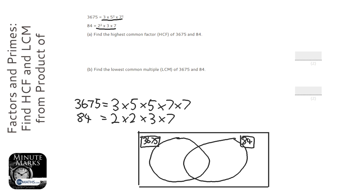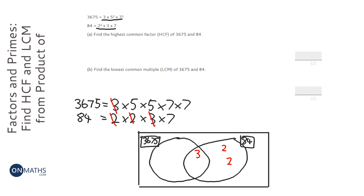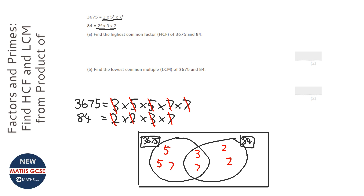If I have a look at 84 first, we've got a 2 there. Well, 2 doesn't go into 3,675, so that 2 is going to be on its own, and this 2 here is going to be on its own. The next one — this 3 appears in both lists, so this 3 goes in the middle. The 5 here only appears in 3,675. And then we've got one 7 that appears in both lists, but we've got another 7 in the 3,675 list. So that's my completed Venn diagram.